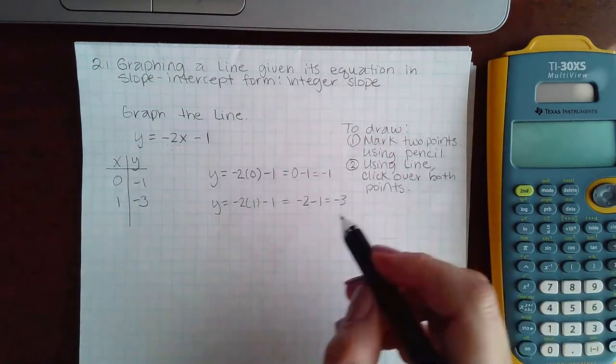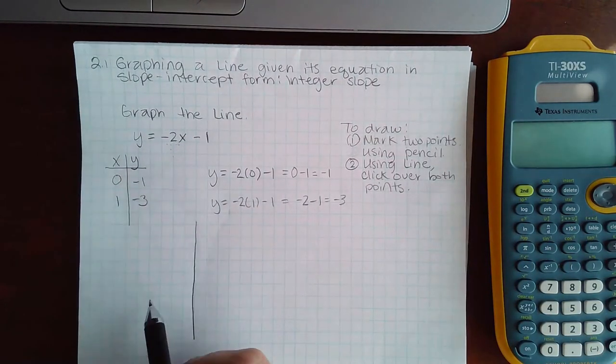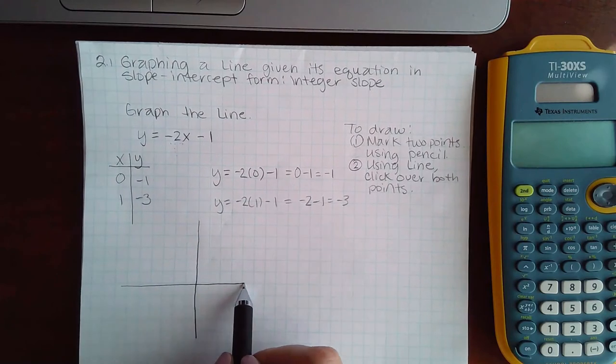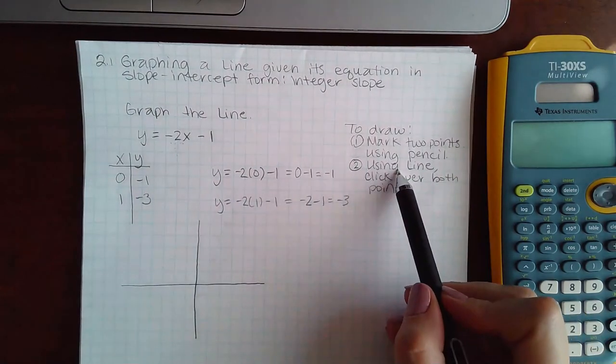And so again, when I go to draw this inside Alex, you can skip step 1, marking the points, and just jump to step 2.